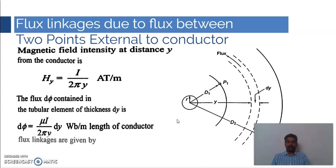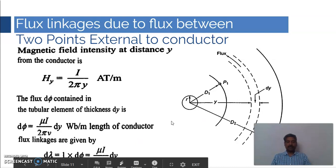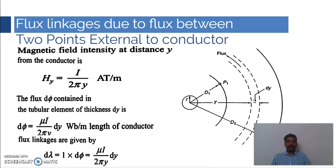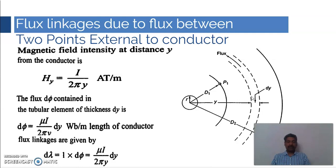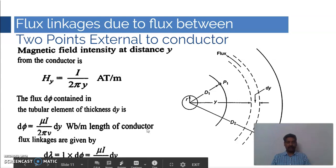To get the total flux we integrate. The flux linkage dλ can be considered as dΦ times 1. In the previous case for internal flux linkages, we used the fractional part y²/R² to account for partial linkage. But here the flux outside the conductor is completely linked with the entire conductor, so we use a factor of 1. Therefore, the change in flux linkage dλ equals 1 × dΦ.